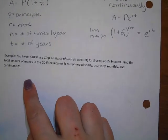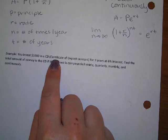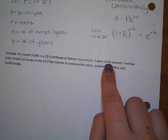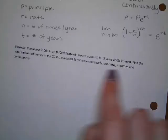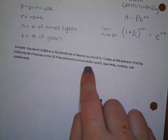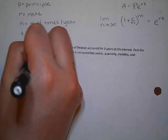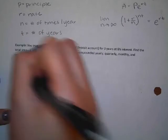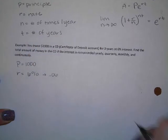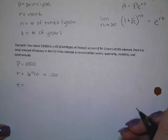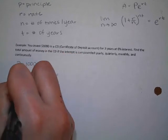All right. Here's the example problem. We are investing $1,000 into a CD, which is a certificate of deposit account, for three years at 6% interest. We want to find the total amount of money in the certificate of deposit account if the interest is compounded yearly, quarterly, monthly, and continuously. So what is the P value? 1000. What is the R value? 0.06. What is the time? Three years.